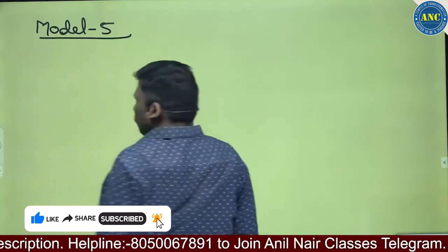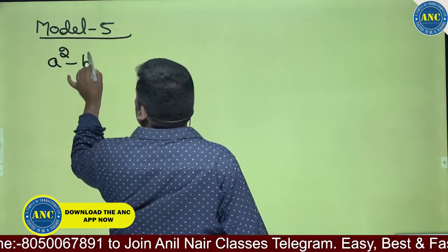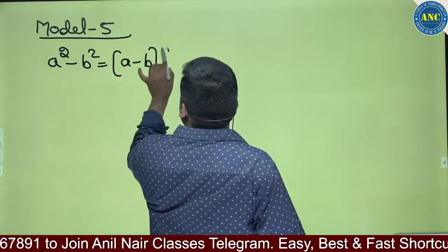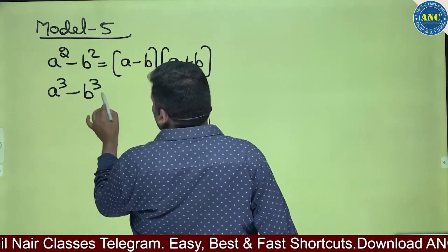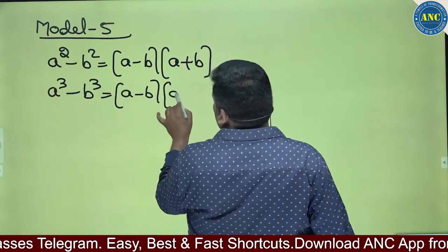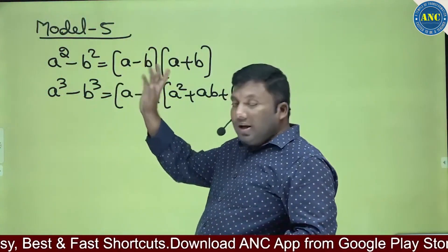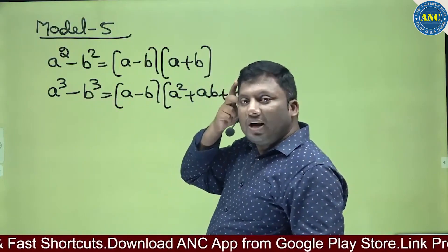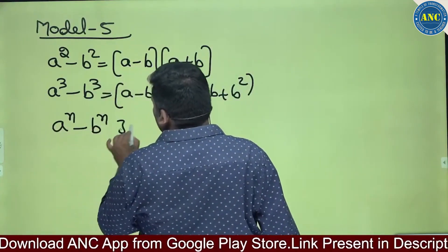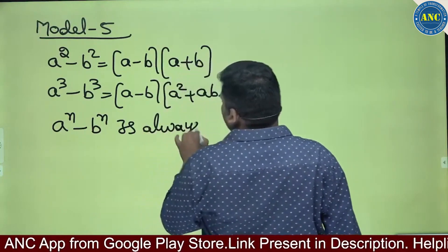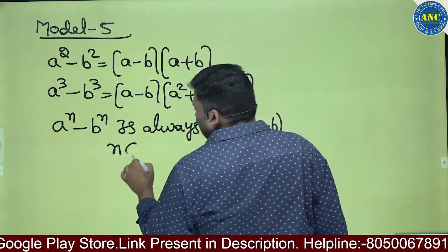Model number 5. A square minus B square is equivalent to A minus B into A plus B. A cube minus B cube is equivalent to A minus B into A square plus AB plus B square. Observe here: A square minus B square is divisible by A minus B, and A cube minus B cube is also divisible by A minus B. The concept is: A power N minus B power N is always divisible by A minus B, if N is a natural number.